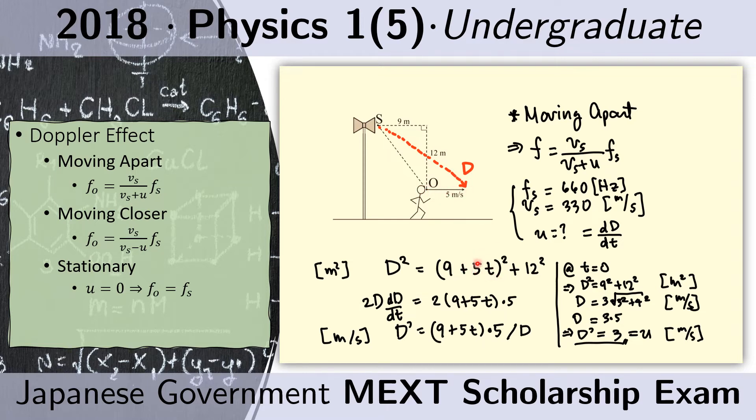After t seconds, the observer would have run by 5t. So the total horizontal distance from the speaker would be 9 plus 5t. The vertical distance is not changing, so that remains 12, which is 12 squared.